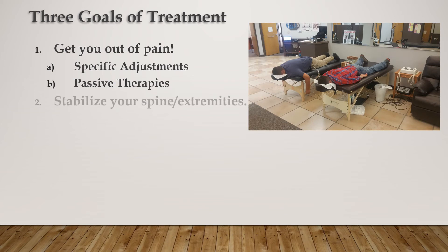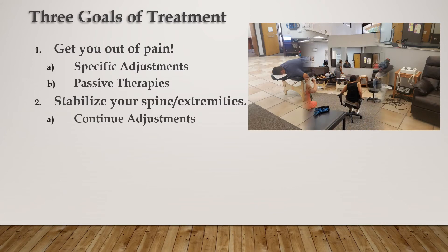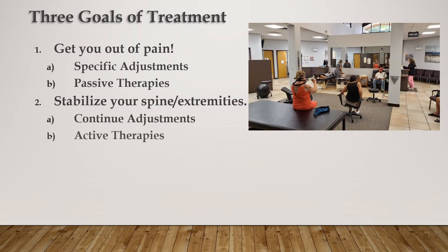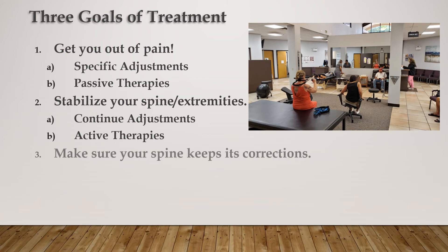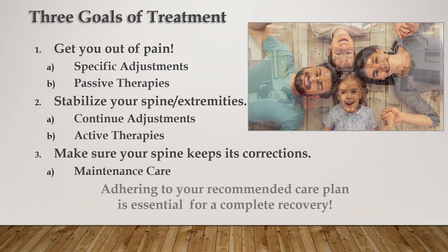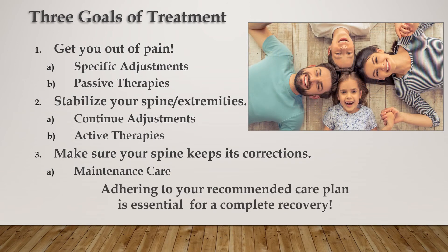Once you begin feeling better, we will move into stabilization of the spine or extremities. We will continue the adjustments, but now incorporate specific exercises called active therapies to stretch tight muscles, tighten loose muscles, and begin stabilization of the spine. Once your symptoms have reached maximum improvement for your condition, we may discharge you from active care, but we continue to recommend that you come in periodically to make sure your spine keeps its corrections — this is called maintenance care. Adhering to the recommendations of your doctor is essential for a complete recovery.